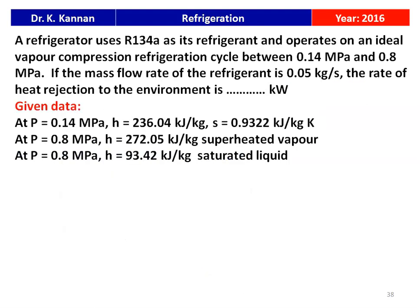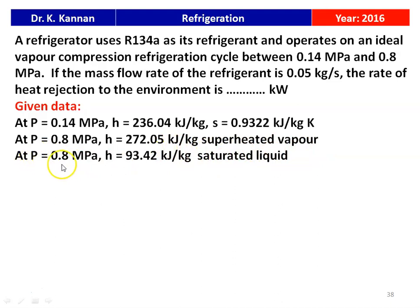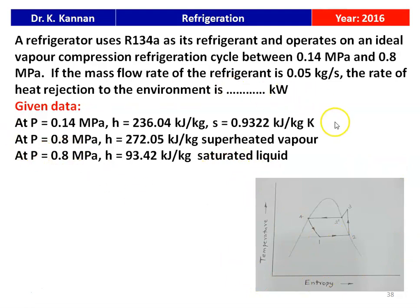The next question is from the 2016 question paper. A refrigerator uses R134A and operates on an ideal vapor compression cycle between 0.14 MPa and 0.8 MPa. The mass flow rate of the refrigerant is 0.05 kg/s. At 0.14 MPa, enthalpy is 236.04 kJ/kg and entropy is 0.9322 kJ/kg·K. At 0.8 MPa, the superheated vapor enthalpy is 272.05 kJ/kg and the saturated liquid enthalpy is 93.42 kJ/kg.